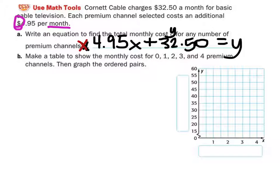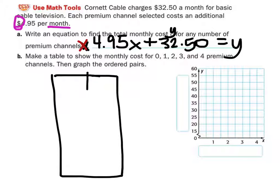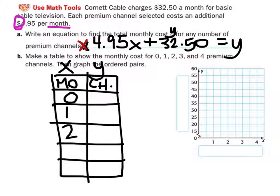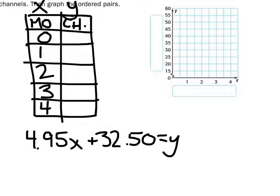Now that we have this equation, make a table to show the monthly cost for 0, 1, 2, 3, and 4 premium channels. Let's make the table first. Here's our table. Vertical tables are good because x's always go on the left, y's are on the right, which will give you immediate ordered pairs. Additionally, x is months and y is the number of channels. It told us it wants the price for 0, 1, 2, 3, and 4 premium channels. If I get no premium channels, we use the equation. If I replace x with 0, what's 4.95 times 0? 0. 0 plus 32.50? 32.50.